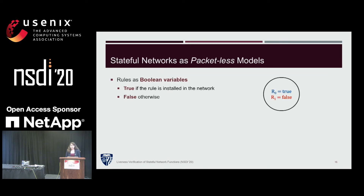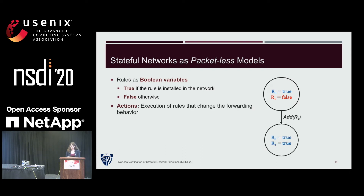Furthermore, we model rules in the most compact form as Boolean variables. More concretely, we model the system as a packetless transition system with Boolean variables for rules. In the packetless model, the Boolean variable of a rule is true if the rule is installed in the network and false otherwise. The actions in this model are the execution of add and delete actions, which can change the forwarding behavior of the network.